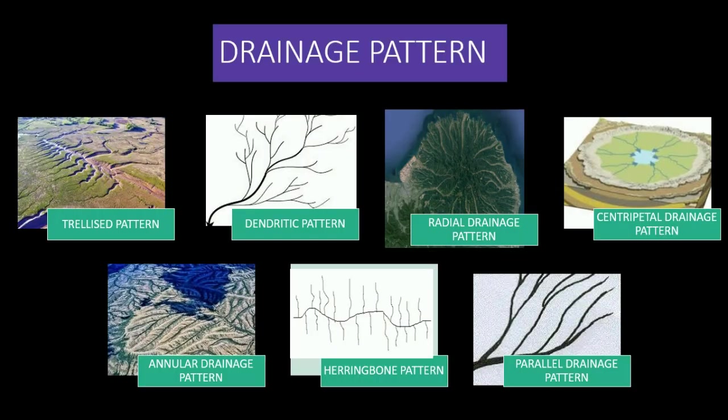Now let's talk about the various patterns of drainage. Trellis drainage patterns are formed by the network of tributaries and master consequent streams which follow the regional slope and are well adjusted to the geological structure. Such patterns are developed in areas of simple folds, characterized by parallel anticlinal ridges alternated by parallel synclinal valleys. If these are closely spaced, then a rectangular pattern forms.